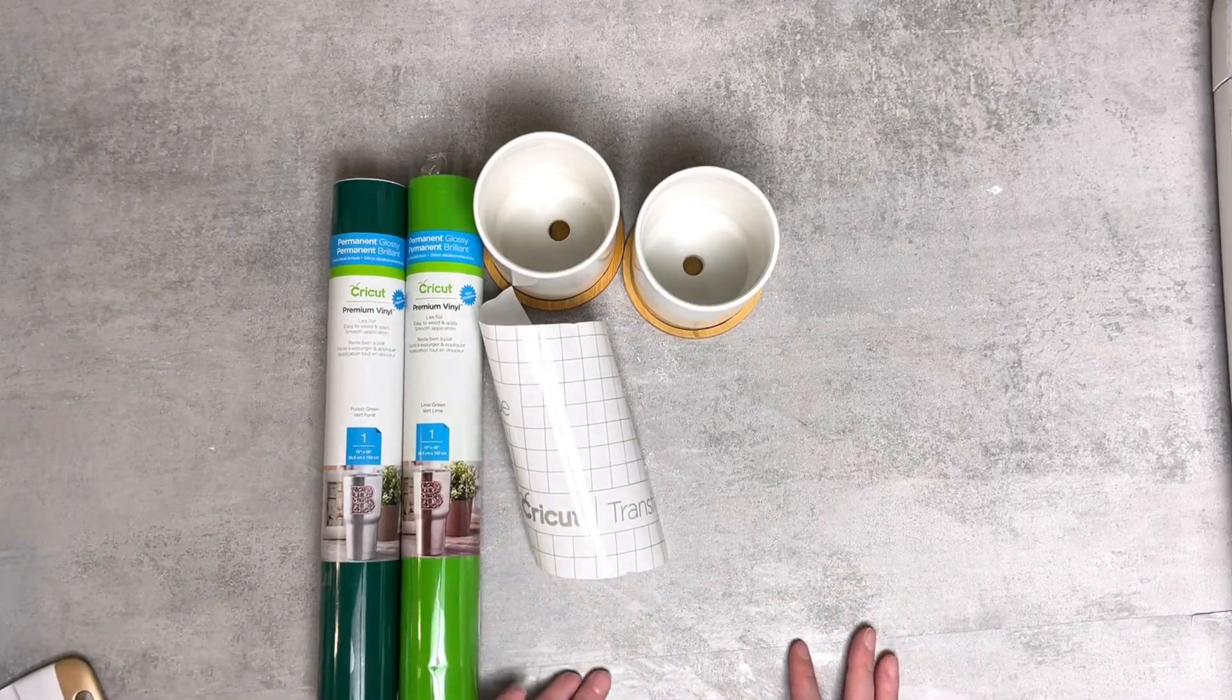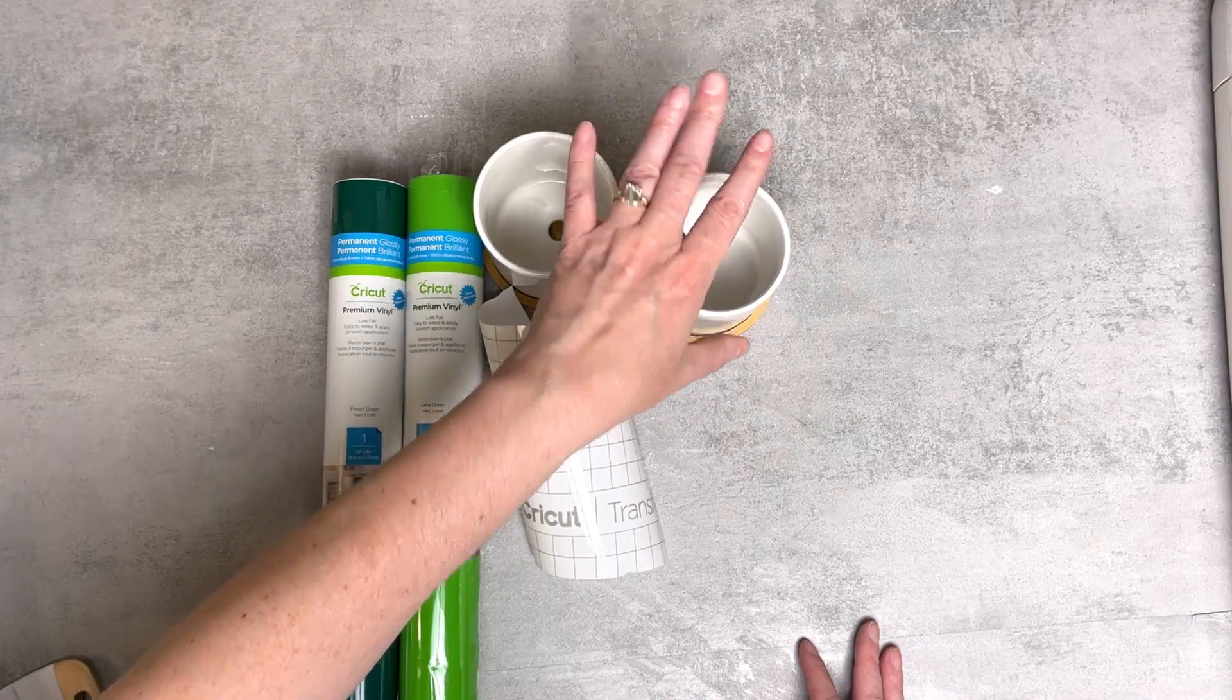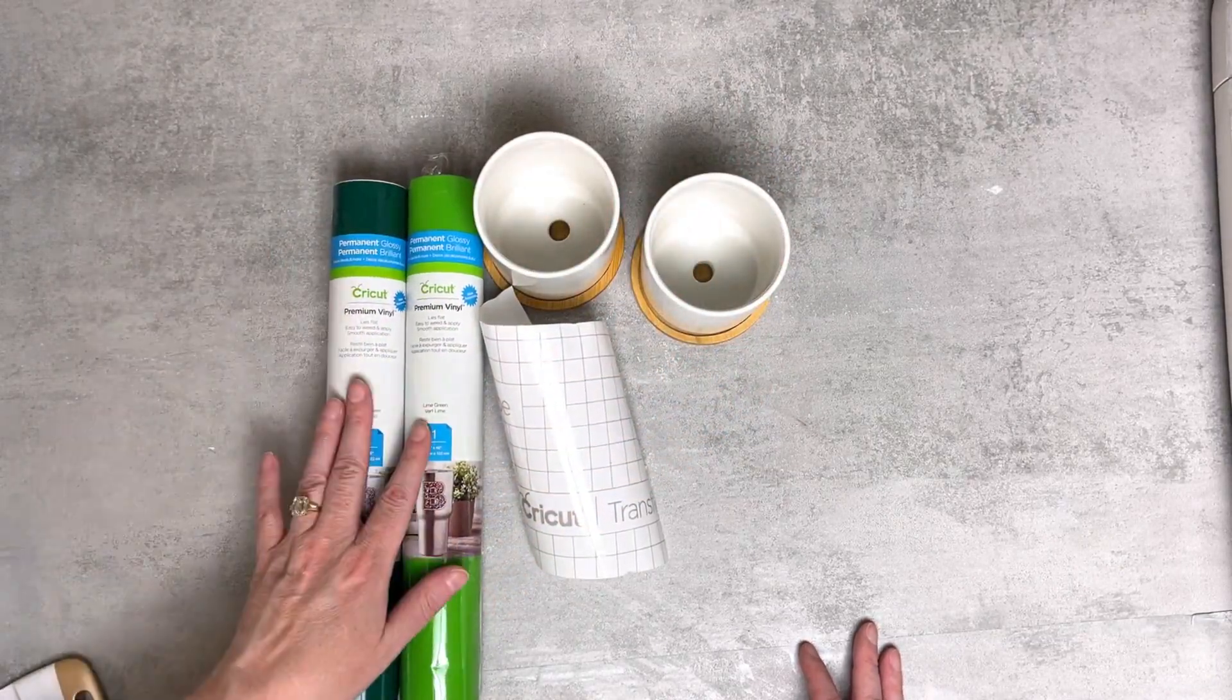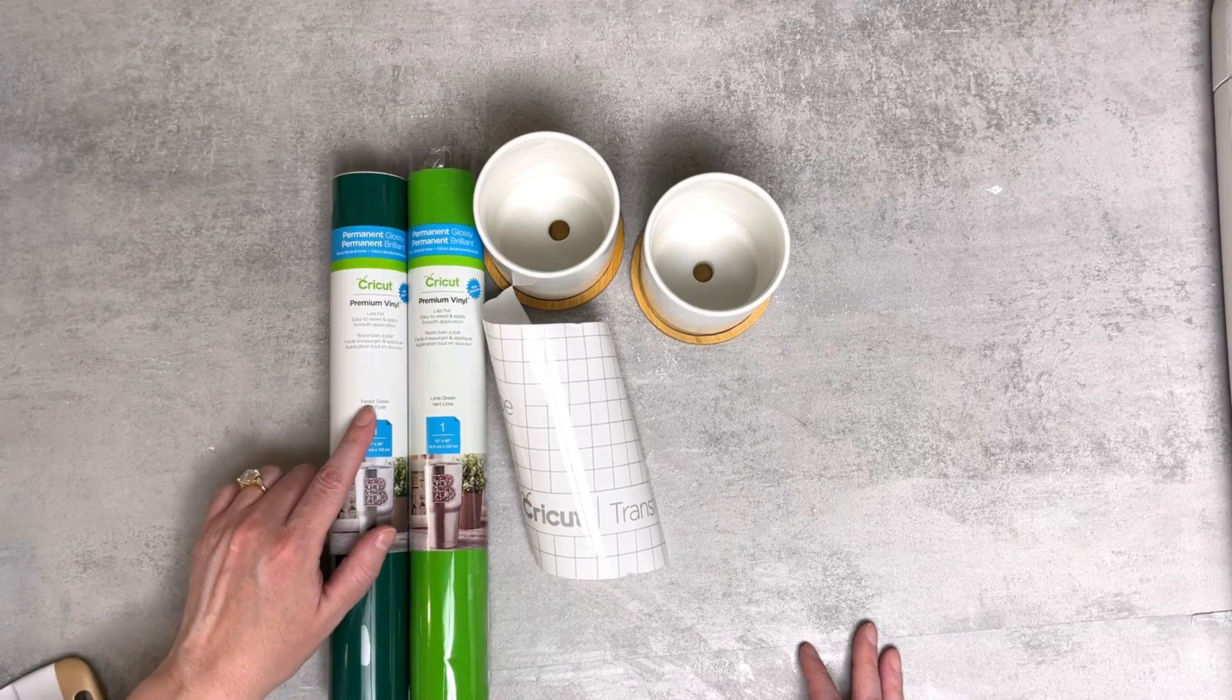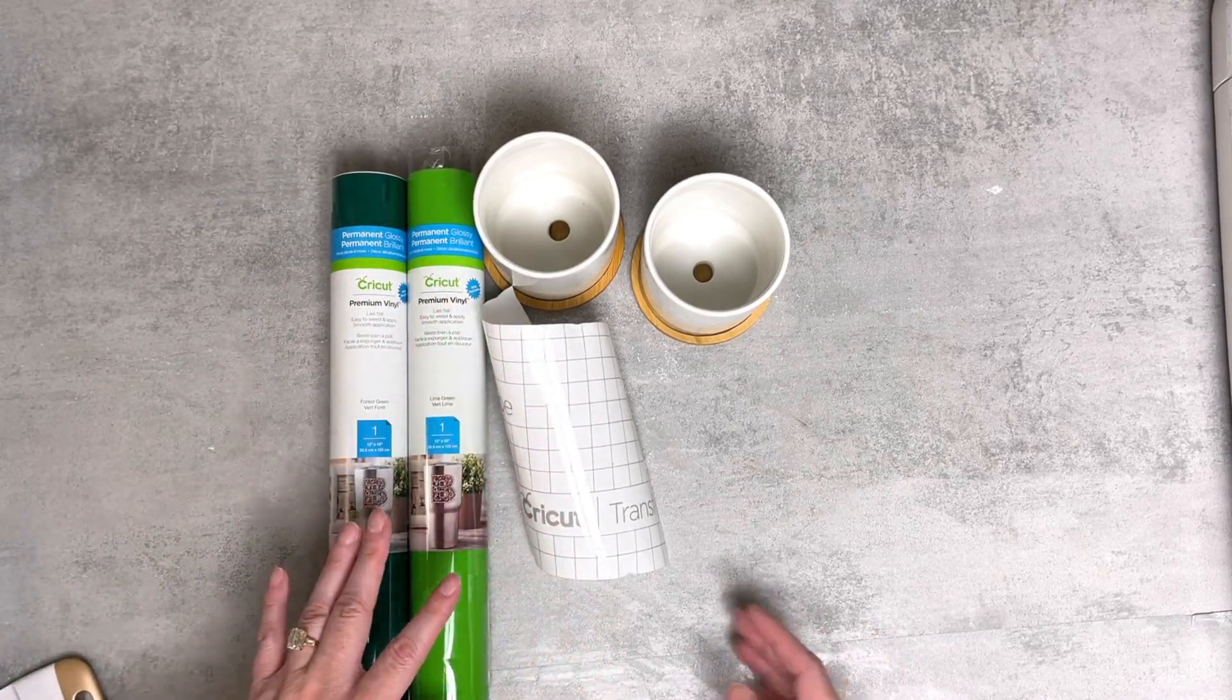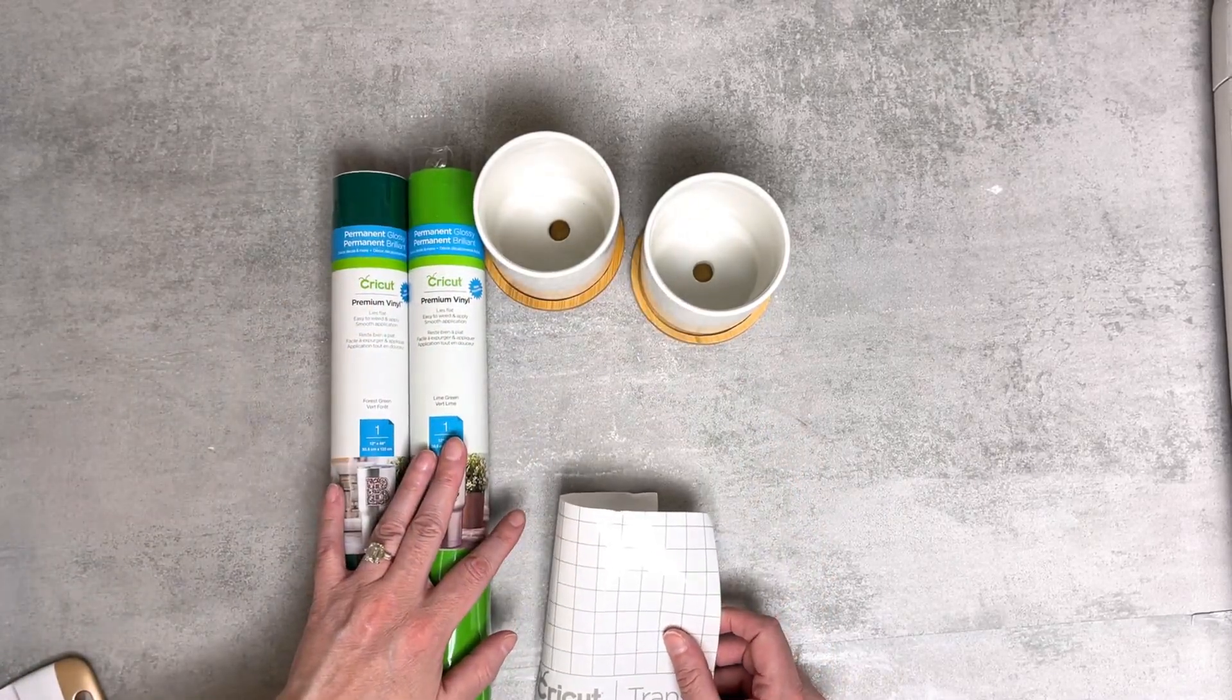Let's talk about what supplies you'll need for this project. You're going to need some plant pots, and I will leave links to all of this information below so that way you can check it out. Some of my links are affiliate if you want to use my coupon code, and that way you save 10% off at Cricut. We're also going to be using permanent glossy vinyl in the colors forest green and lime green. Or you can switch it up and use whatever colors you have on hand. And some transfer tape. So let's go ahead and get started.